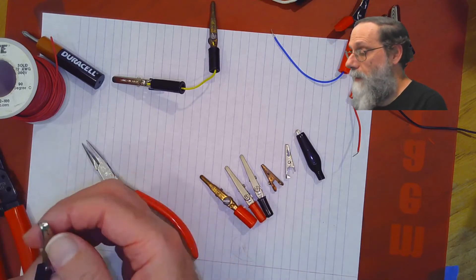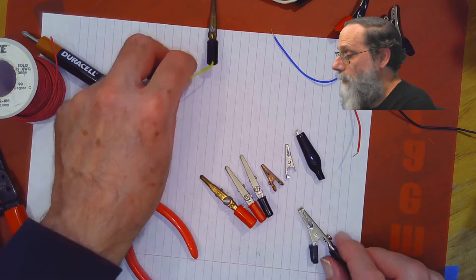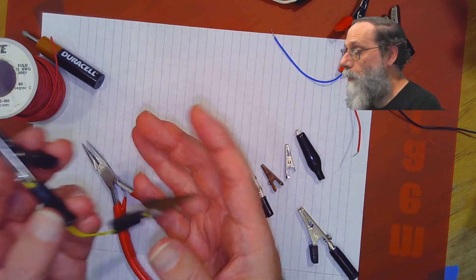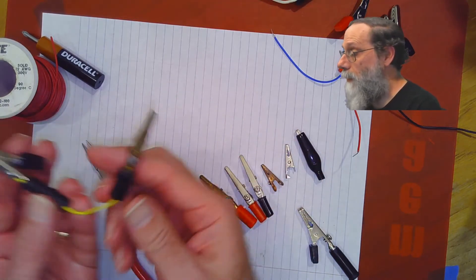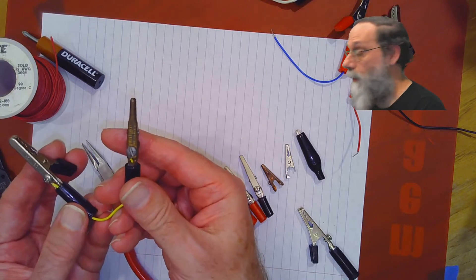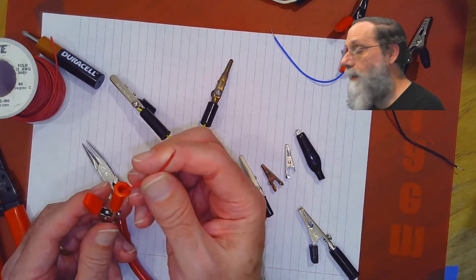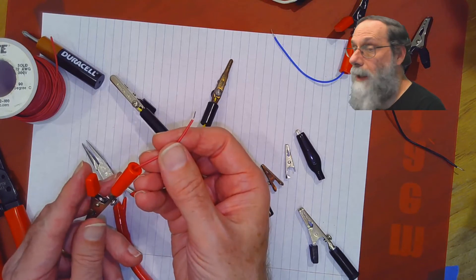The idea is that the alligator clip is connected to a wire, so you can make an electrical connection to the wire and then from the wire either to another alligator clip, or you can just take that end of the wire and plug it into a breadboard.